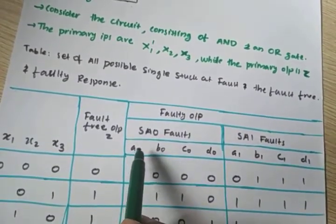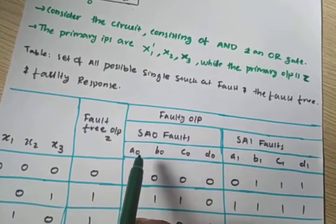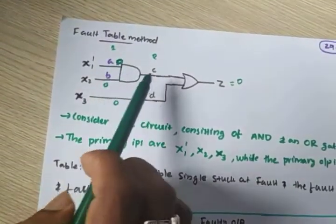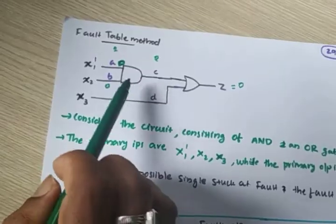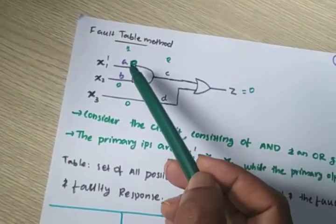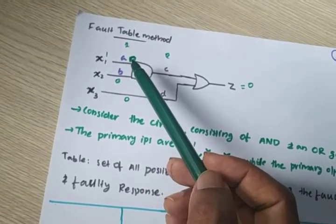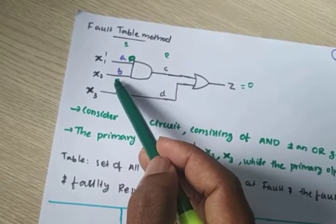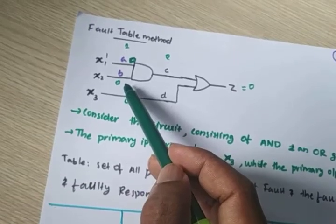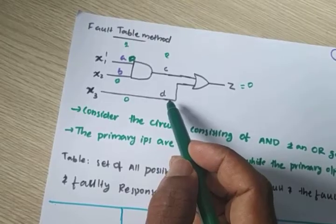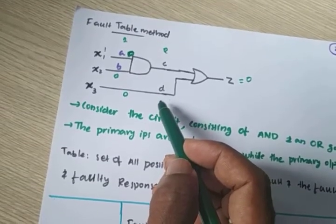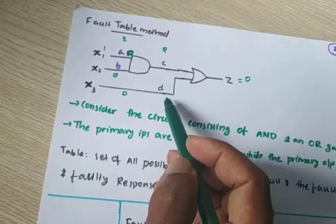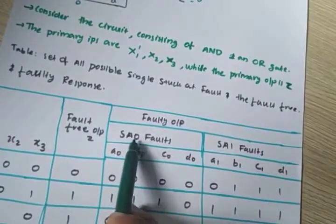The columns a0, b0, c0, d0 represent stuck-at-zero faults at lines A, B, C, D respectively. Similarly, a1, b1, c1, d1 represent stuck-at-one faults at those lines. Check it 0 and check it 1 refer to stuck-at-0 and stuck-at-1 faults on each internal line.